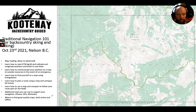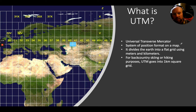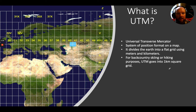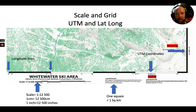We'll also cover additional tools to support your navigation — phone GPS, altimeter watches — and where to find good quality maps both online and offline. So what is UTM? It's the Universal Transverse Mercator system, a position format on a map that divides the earth into a flat grid using meters and kilometers. For backcountry skiing and hiking, our maps generally break down into one-kilometer square grids, which makes it very handy.